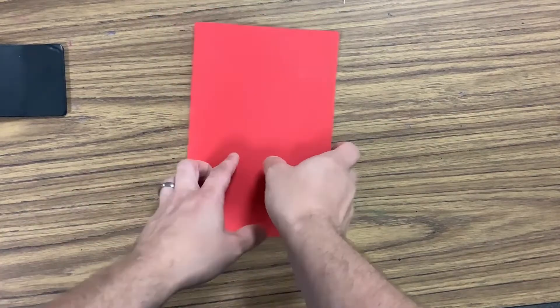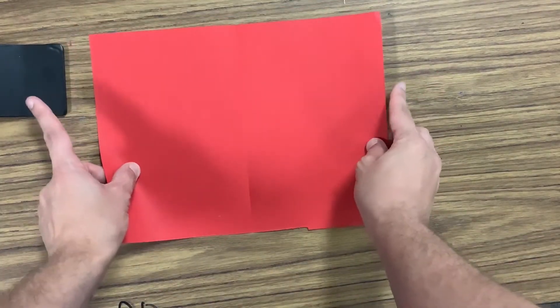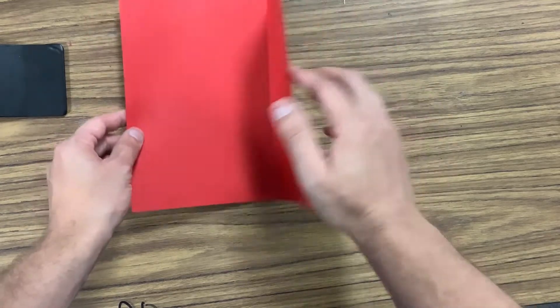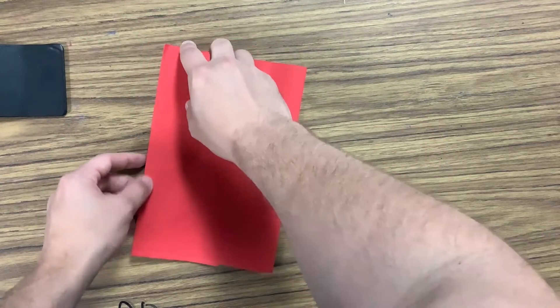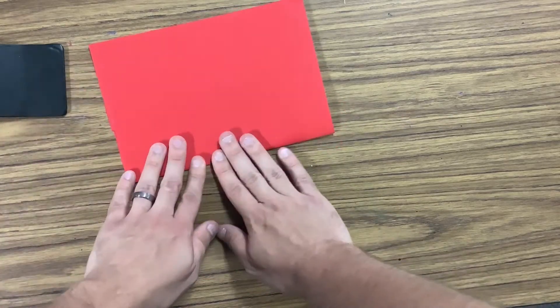So getting started with this, we will get a piece of paper. Now your paper is going to look like this. Go ahead and take the short side and the other short side. Fold it hamburger style. Make sure the corners are matching. Fold and crease.